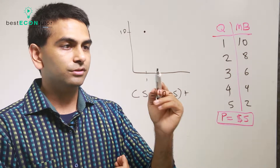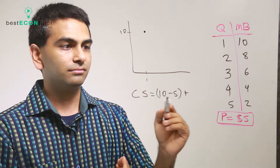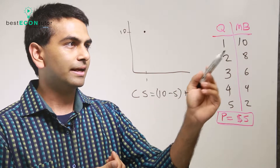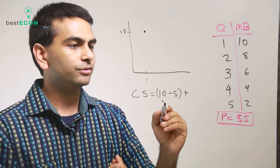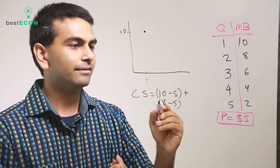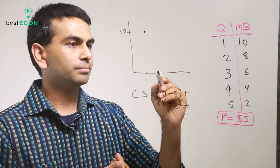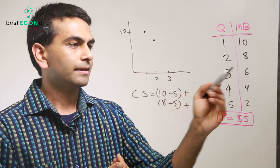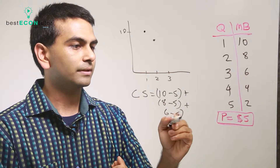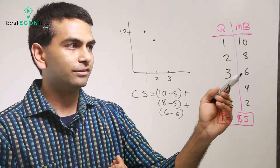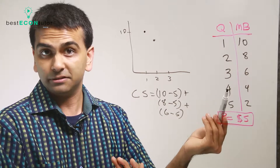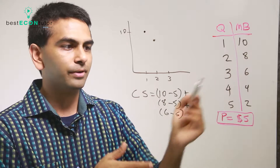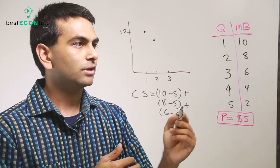Your consumer surplus so far is that difference for that first item. Then for the second item, you're willing to pay eight but you paid five, so that's eight minus five. And then for the third item, six minus five — because you're willing to pay six dollars for the third item but you only have to pay five. For each one you're looking at the marginal benefit and subtracting the price, then you add those all up.